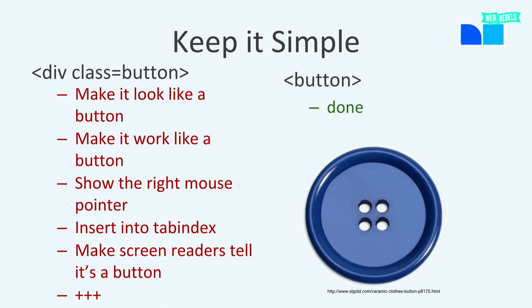If you want to make a button and you make it a custom way with a div class button, then you have to make it look like a button, work like a button, show the right mouse pointer, insert it into the tab index, make the screen reader tell it's a button, and so on. However, if you use a plain HTML button tag, then you're done — you don't have to do anything, because all the screen readers and browsers have been working for years to make that work.